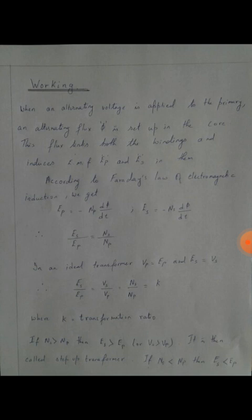If vice versa, then it is called a step-down transformer. That is, ES by EP equals NS by NP, or EP by NP equals ES by NS.